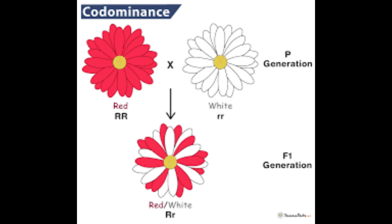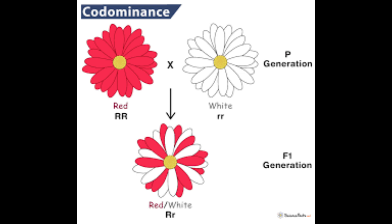You'll notice that both genes are equally displayed visually in the offspring. Neither gene is dominant over the other and both are visible — they are co-dominant.